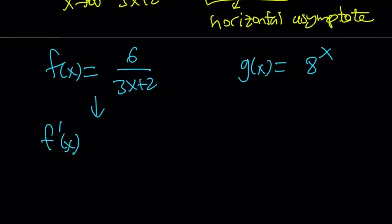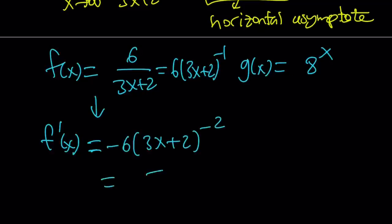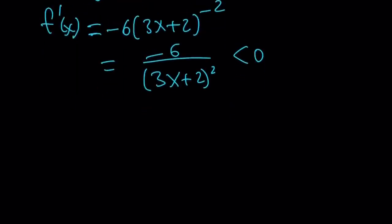If you differentiate f of x, you're going to get, by the way, I want to write it as six times three x plus two to the power negative one. You can also use other rules for differentiation. But anyways, you can just bring down the negative one, negative six, and then reduce the power by one. That's going to give you negative six. And guess what? This is always going to be negative. This also proves that our function f of x, the rational function is always going to decrease.